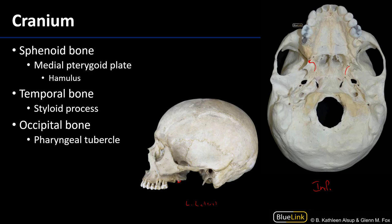There is a line coming down that is a condensation of the buccopharyngeal fascia, and we call this the pterygomandibular raphe. Posterior to this pterygomandibular raphe is the superior pharyngeal constrictor, and anterior to it will be the buccinator muscle. The superior pharyngeal constrictor and the buccinator are contiguous, separated only by that pterygomandibular raphe.